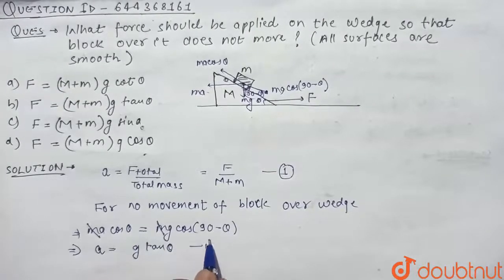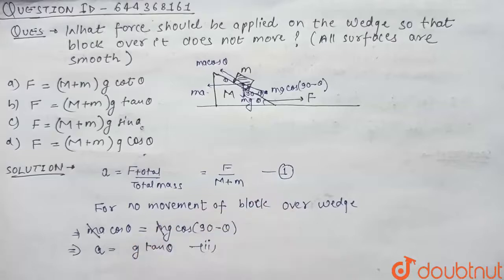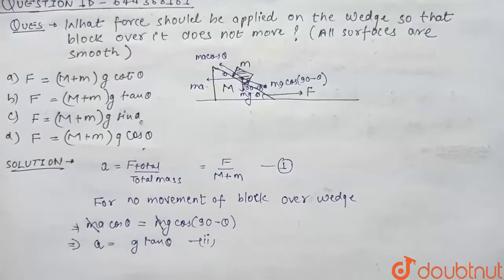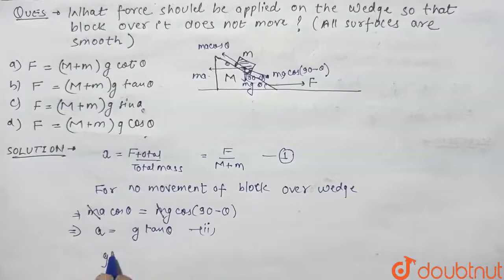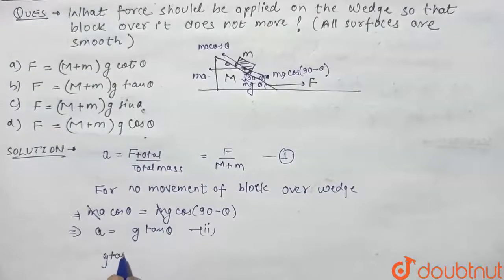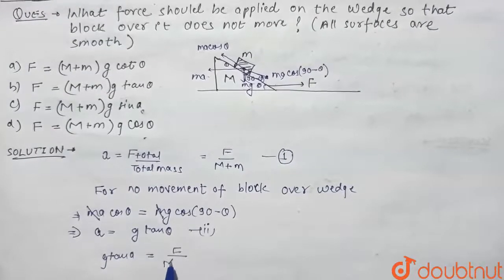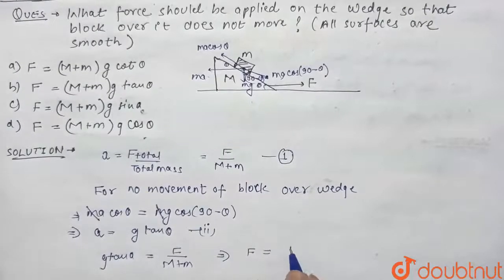Now we will put this value of acceleration in equation 1. So acceleration is g tan theta equals force upon capital M plus small m. So from here, our force comes out to be (M + m) g tan theta.